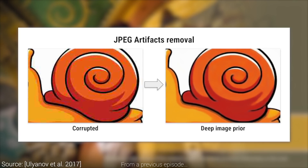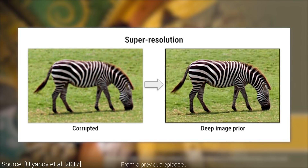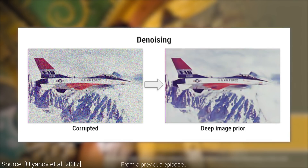DIP was capable of performing JPEG compression artifact removal, image inpainting — filling in parts of the image with data that makes sense — super resolution, and image denoising. It was quite the package.